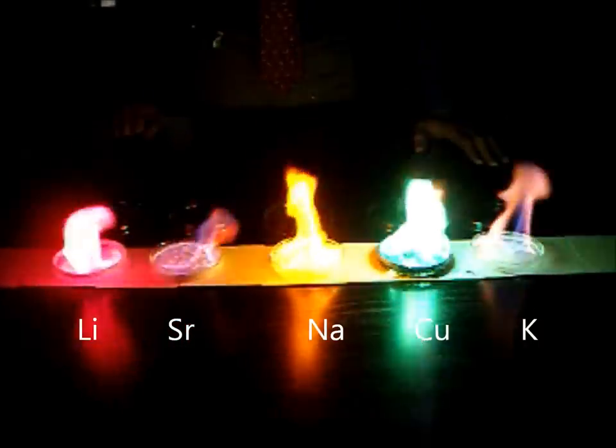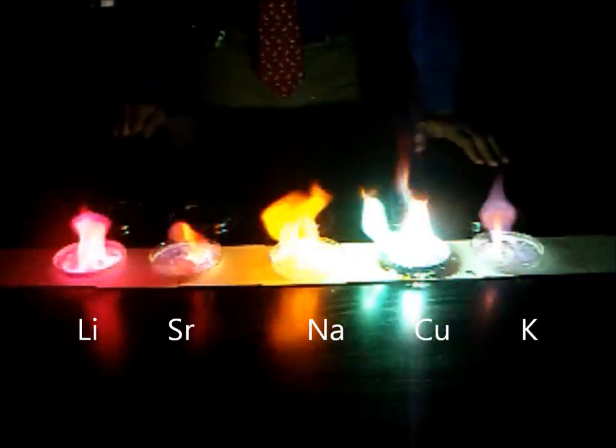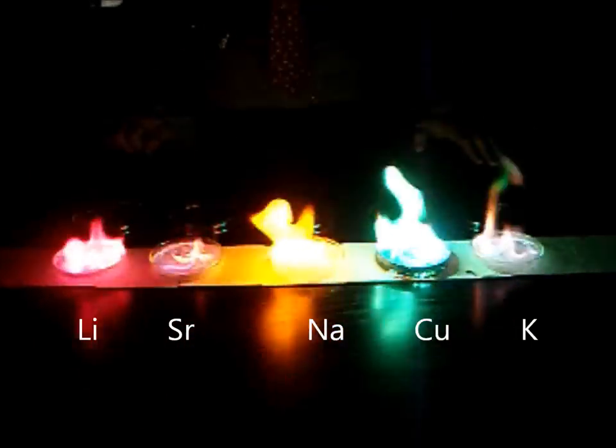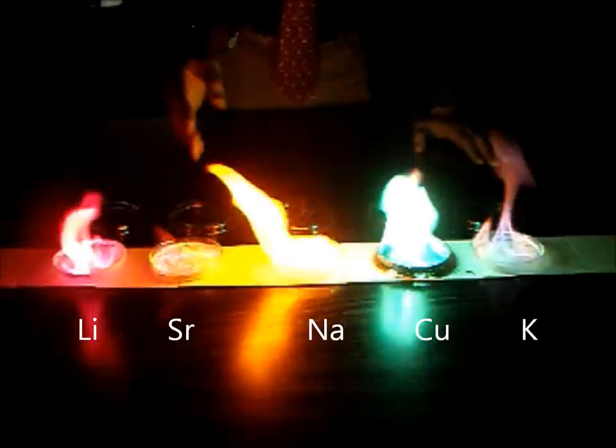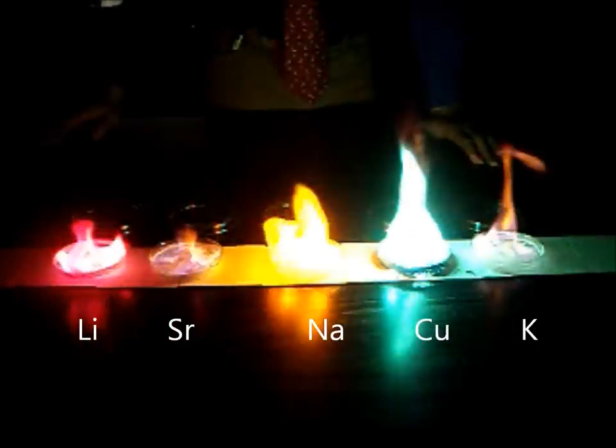So they give off the energy in discrete packets, very specially sized packets, that we call photons. These photons right now currently are in visible light spectrum. Pink for lithium, orange for strontium, yellow for sodium, green for copper, and again purple for potassium.